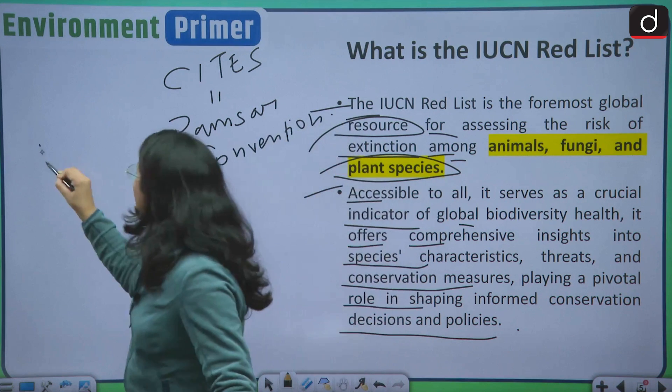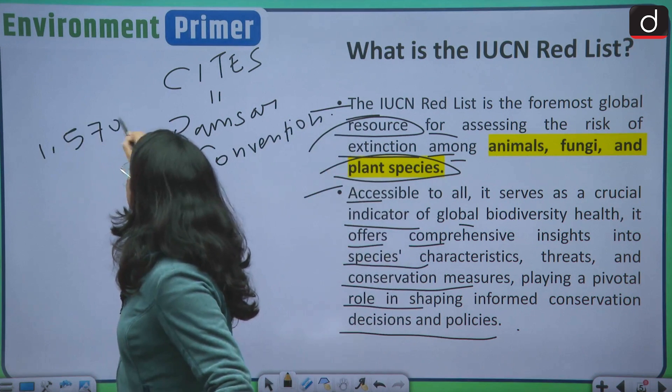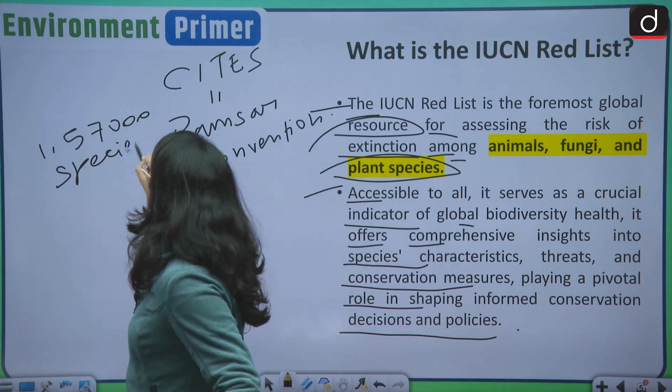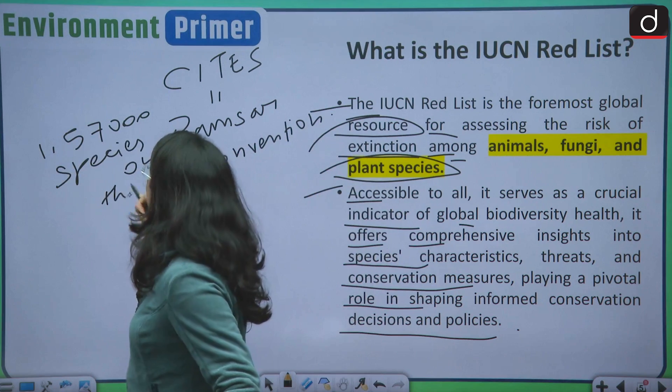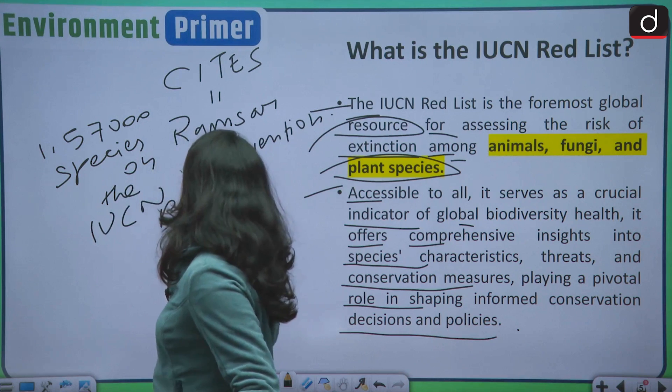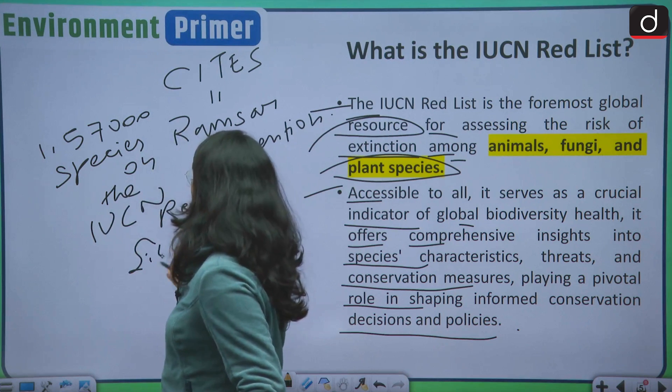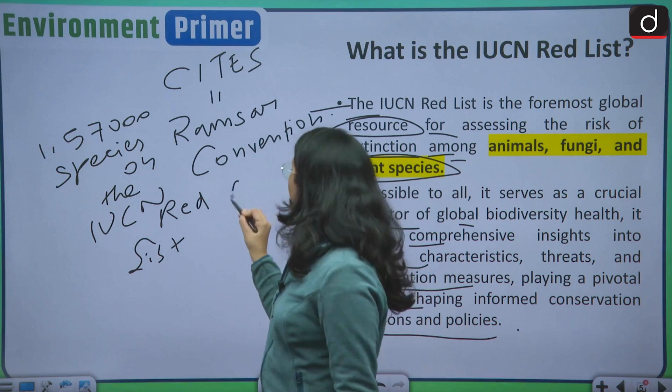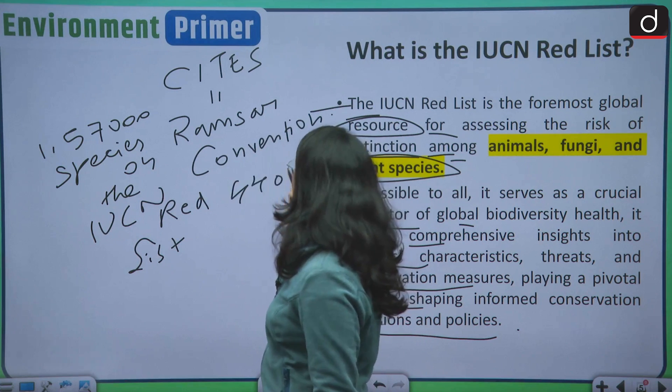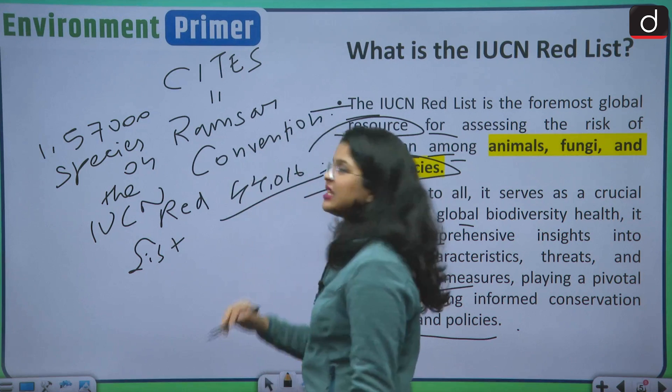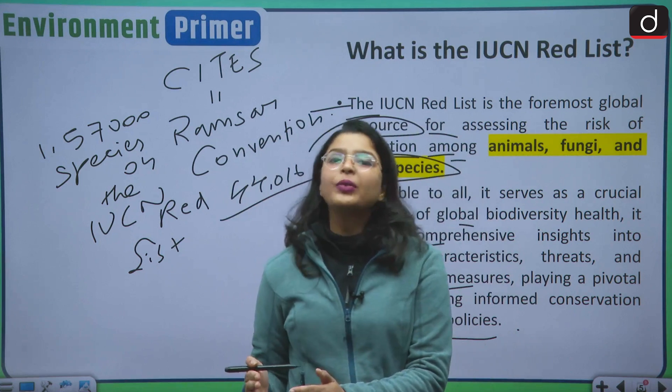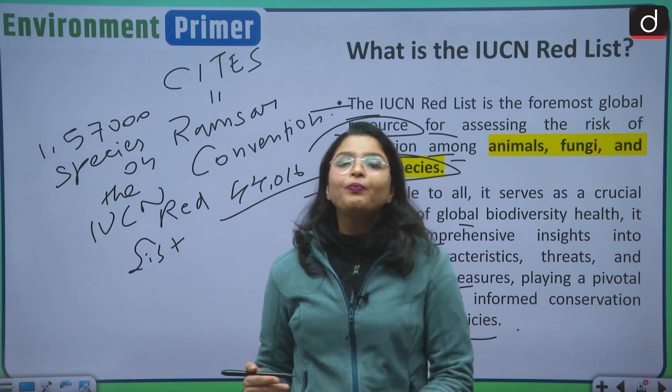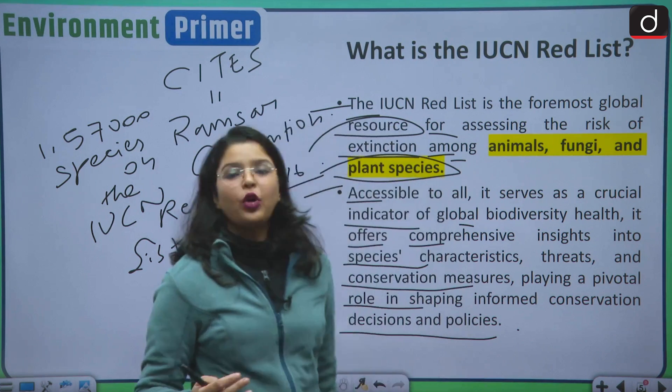As of now, there are 1,057,000 more than this species on the IUCN Red List. And among this 1,057,000 species, 44,016 species are going to become extinct, are on the verge of extinction. That is why this list becomes even more important.